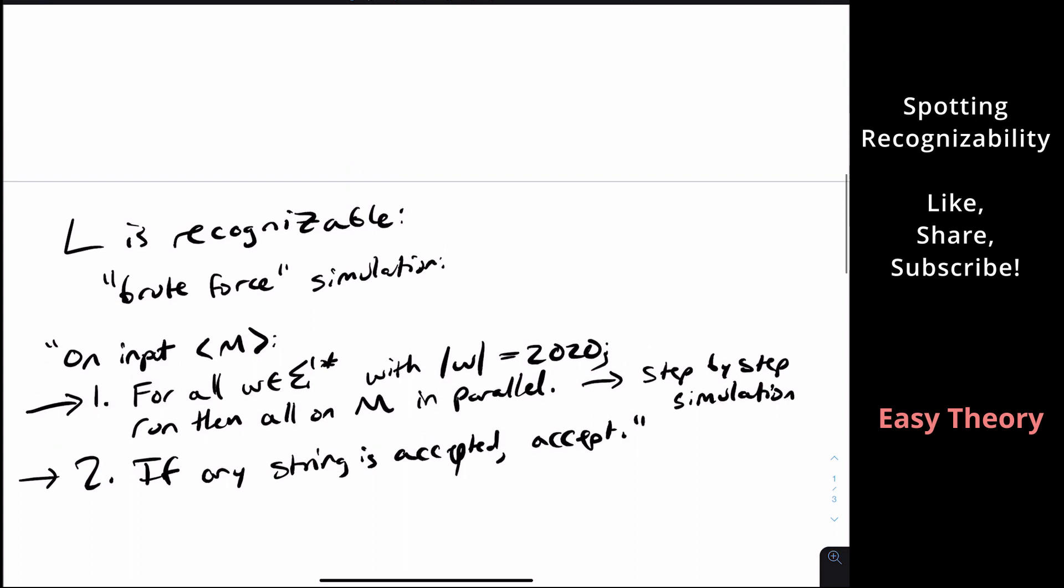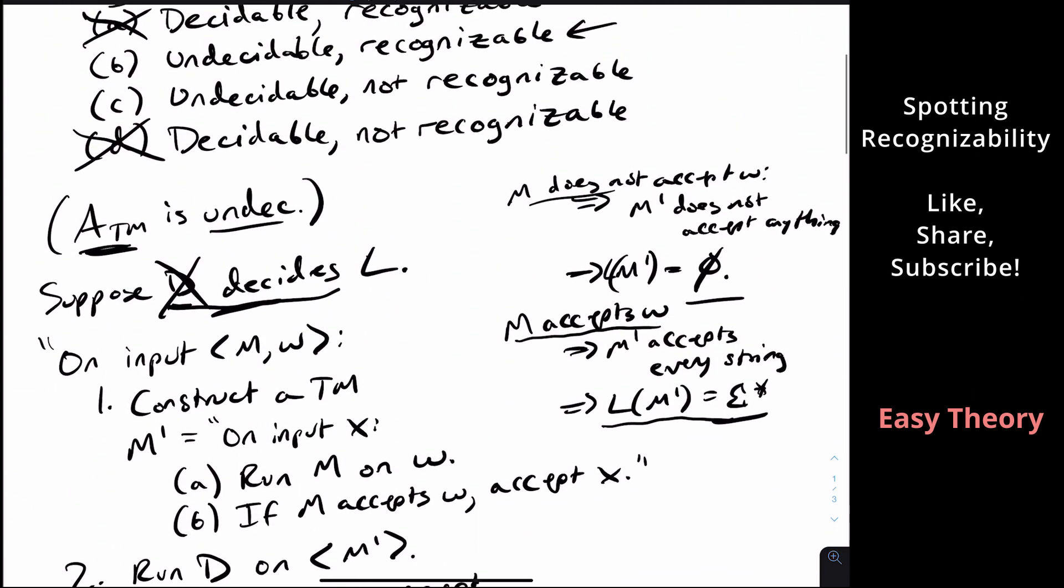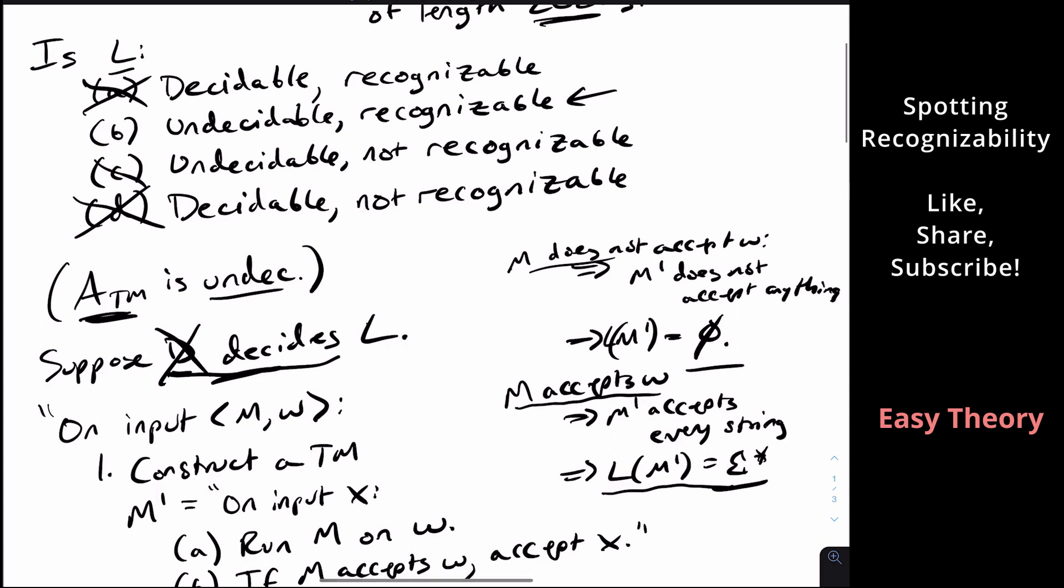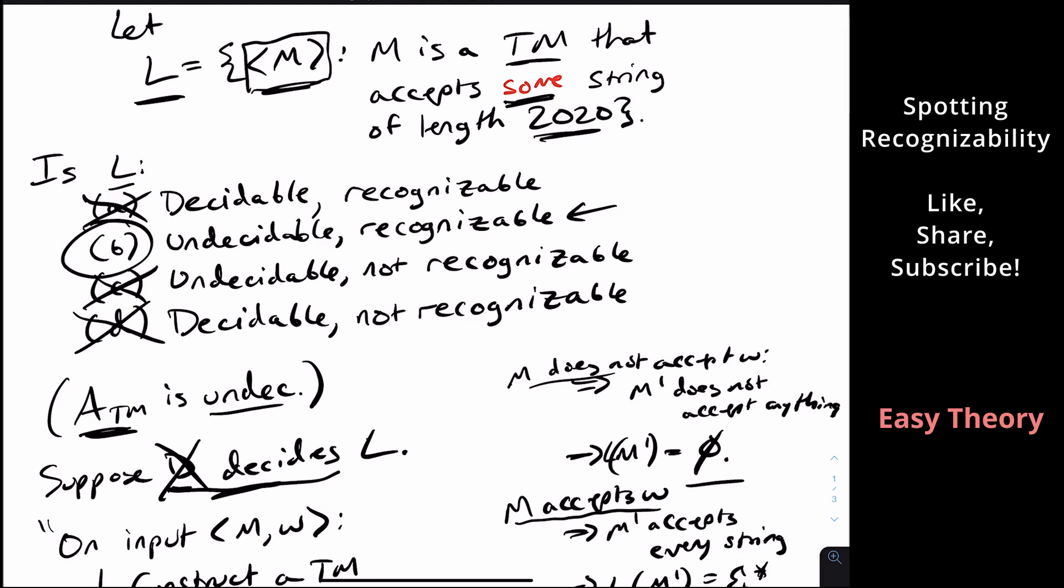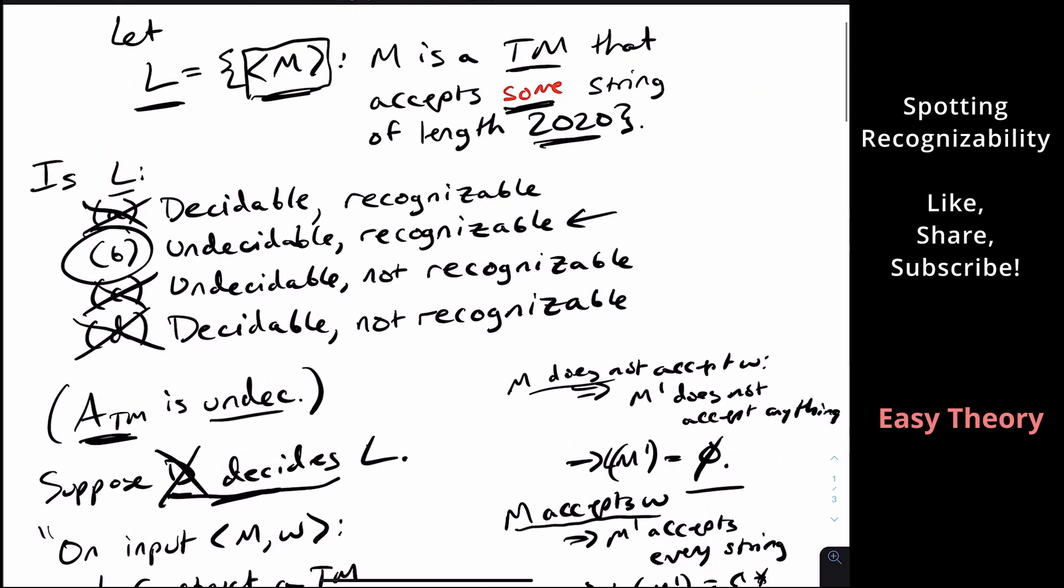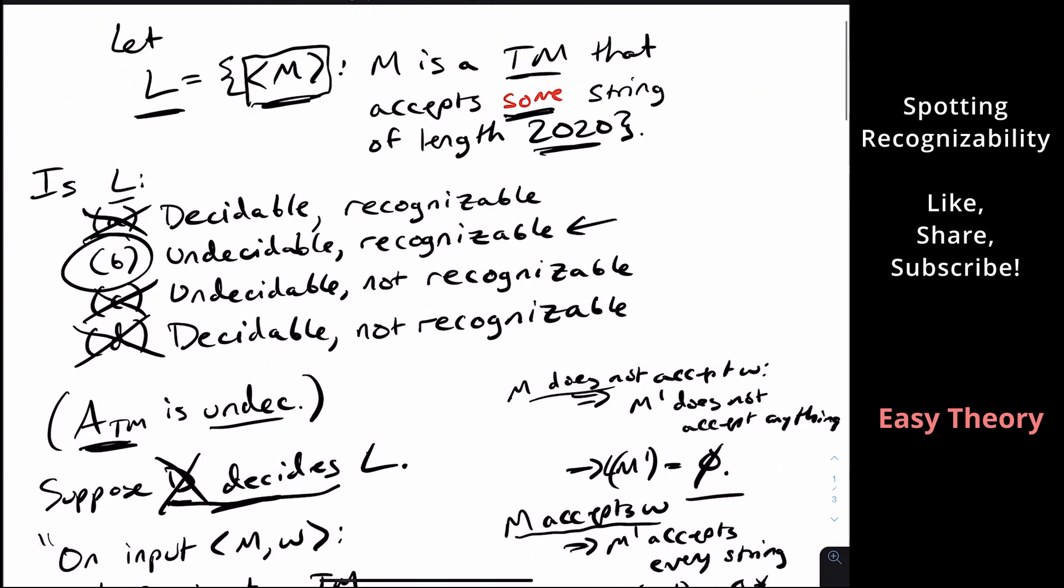So therefore, we can conclude that this language is in fact recognizable. So C is wrong, B is right. So one thing that you should always know is whenever you are faced with a problem like this, where you have accept some string of length, whatever, then it must be undecidable because it's related to the ATM problem like the way we did here. And if it accepts some string with some property, then very likely it is recognizable because we can do a brute force simulation.